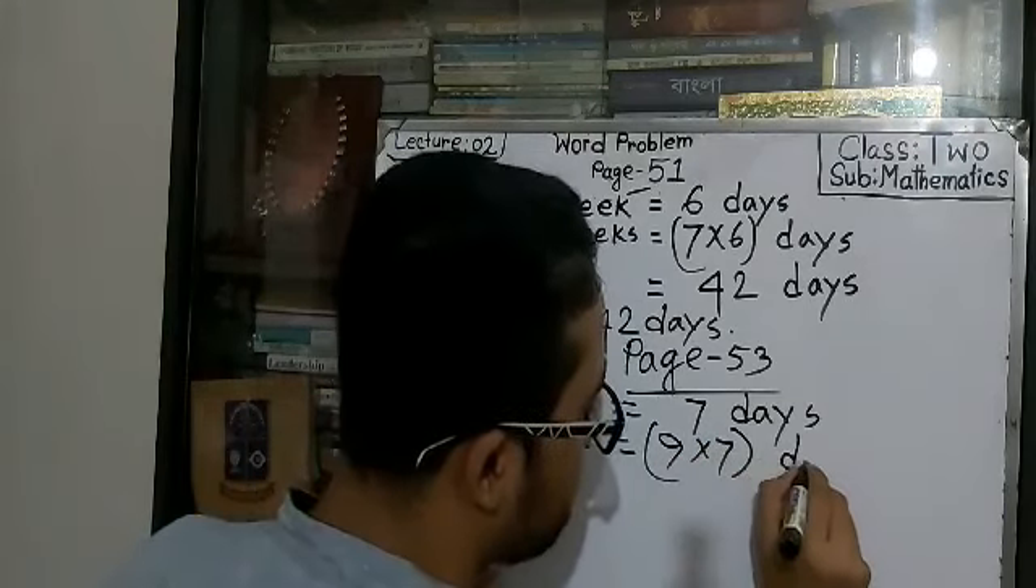9 will be multiplied by 7 days. We have to show the multiplication. 9 will be multiplied by 7.